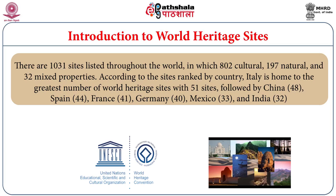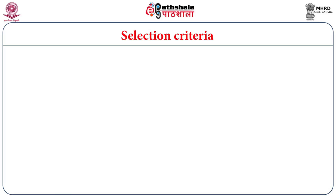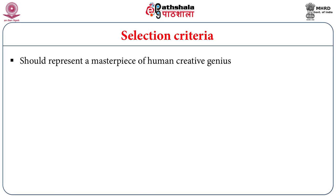To include any particular world heritage site under the UNESCO list, it should have universal outstanding value. UNESCO has given 10 criteria to meet that particular universal outstanding value, among which at least one criteria should be fulfilled to get the world heritage status. The first criteria is that it should represent a masterpiece of human creative genius, in terms of architecture or aesthetic value.